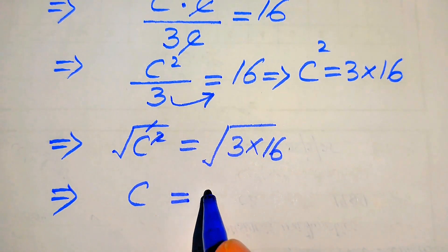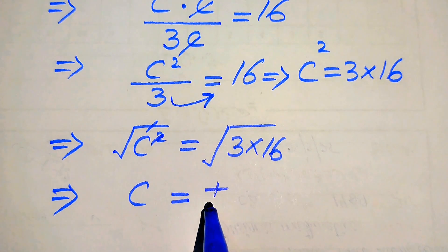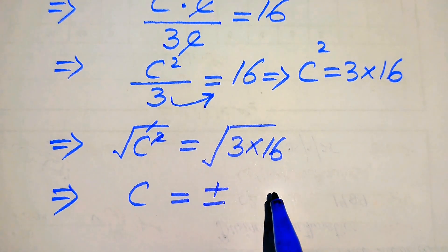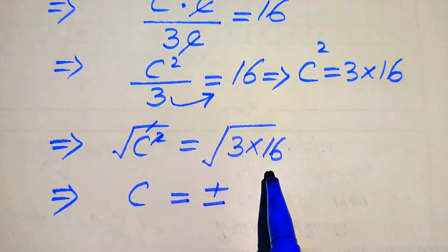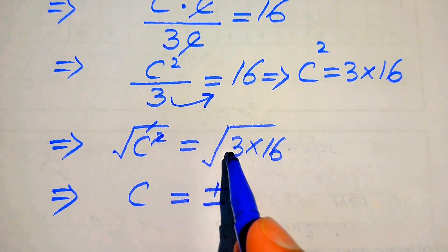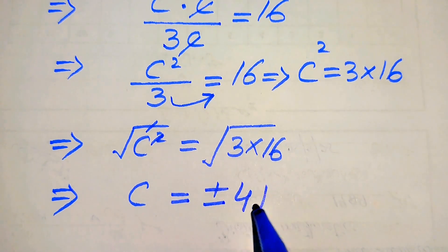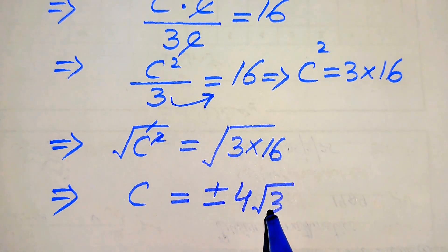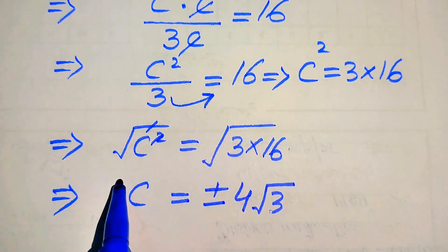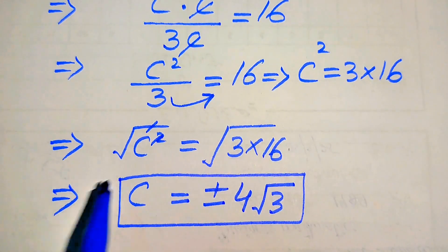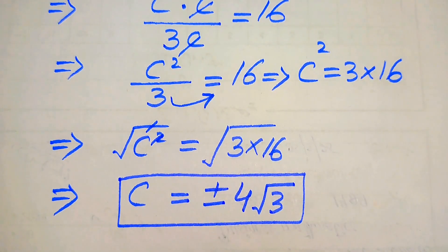We write the plus-minus sign, and the square root of 16 equals 4, into square root of 3. So c equals plus or minus 4 times square root of 3. These are the two real roots of the given equation.